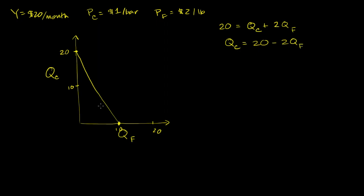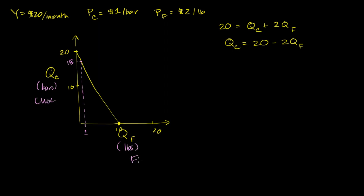We've also looked at the idea of an indifference curve. Let's say I'm sitting at some point on my budget line where I'm consuming 18 bars of chocolate and one pound of fruit. You can verify that makes sense — it's $18 plus $2, which is $20. So I'm at this point on my budget line: 18 bars of chocolate (in bars) and one pound of fruit per month (in pounds).